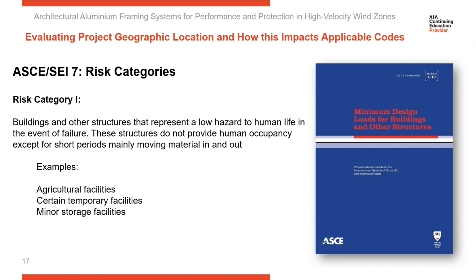Risk Category 1 would be a structure that would have minimal impact on the community if it was lost. Think about barns, warehouses, storage facilities — structures that don't house people, don't have critical functions, or structures that are isolated from others. So if they were damaged during a storm, they wouldn't risk blowing material damage into adjacent buildings.